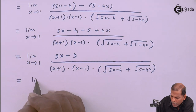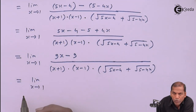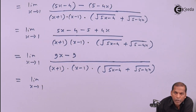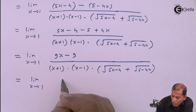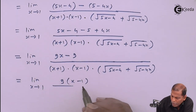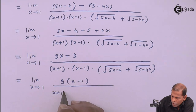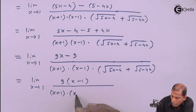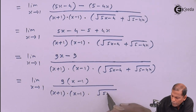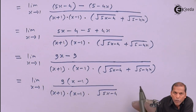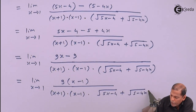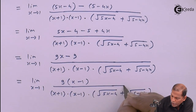So that equals limit x tends to 1. In the numerator we take 9 common, giving 9 times (x minus 1), upon (x plus 1)(x minus 1) times square root of (5x minus 4) plus square root of (5 minus 4x).